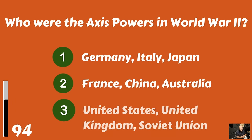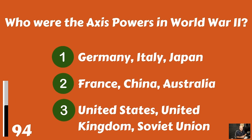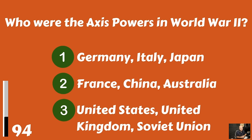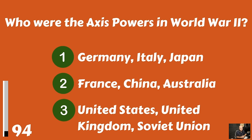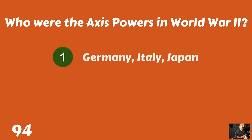Who were the Axis powers in World War II? Germany, Italy, and Japan? France, China, and Australia? Or the United States, United Kingdom, and Soviet Union? It was Germany, Italy, and Japan.